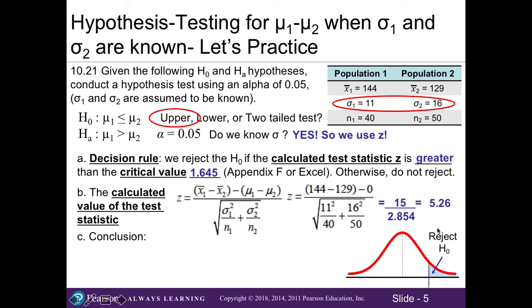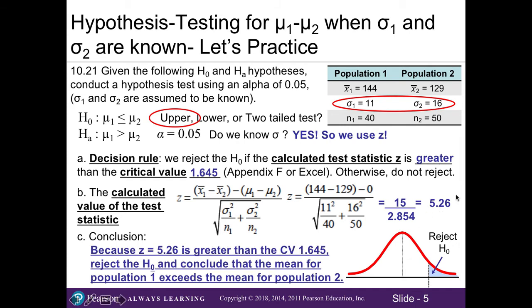Just like in Chapter 9, we now compare our test statistic to our critical value. Because our test statistic of 5.26 is greater than our critical value of 1.645, it falls out in the rejection region. Therefore we reject the null, and we can conclude that the mean for population 1 exceeds the mean for population 2. That's how you do a hypothesis test for two population means when we know the population standard deviations.